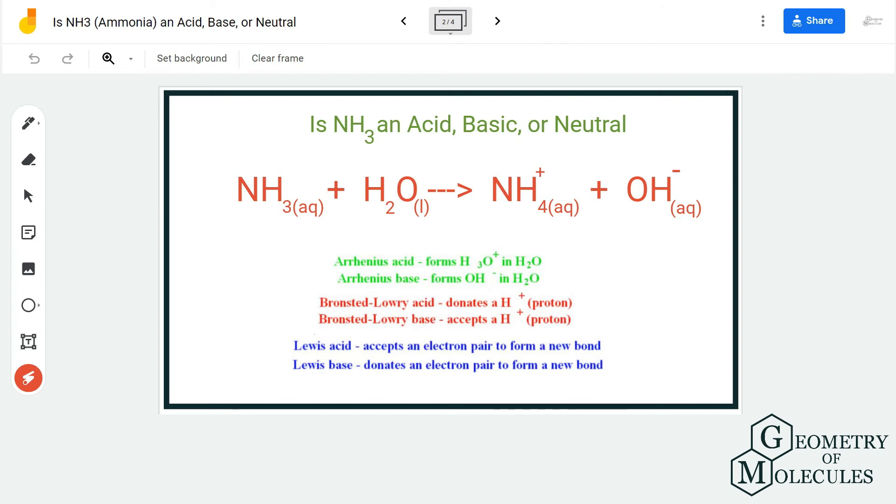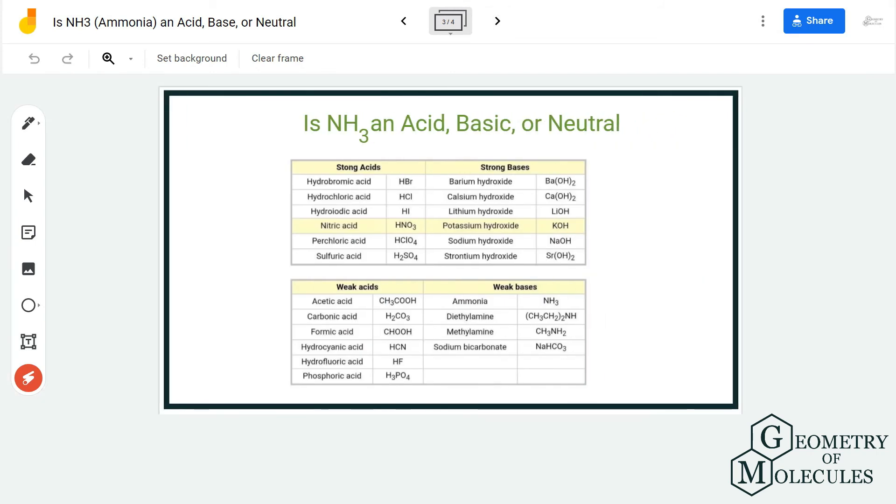Now here, NH3 is a weak base, and the reason why I say this is you can look at this table and you can see that there are strong acids, strong bases, weak acids, and weak bases. In weak bases, we have placed ammonia because it is a weak base.